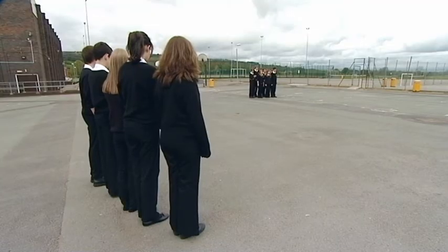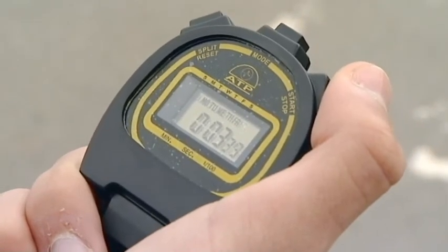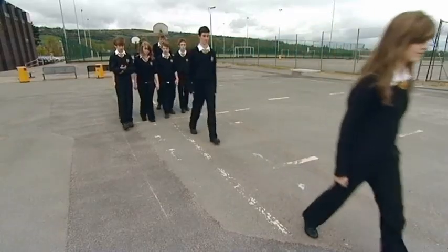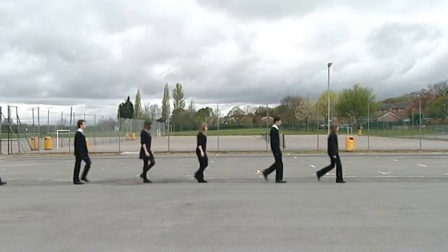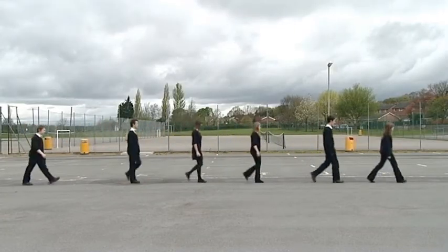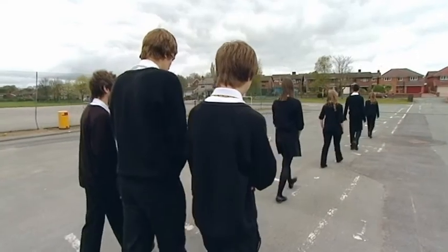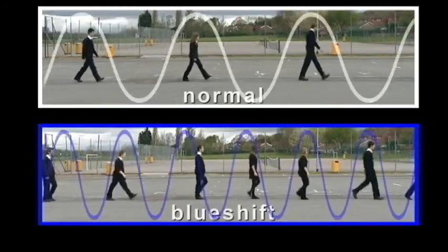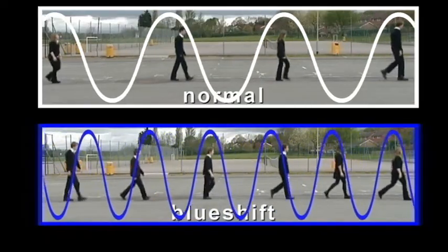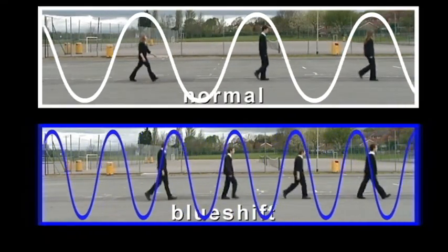You can also perform the same demonstration with the wave group moving forwards. To the observers, the wave will appear to be squashed. Its wavelength will have decreased. When an object is moving towards us, its light will appear to have a shorter wavelength. This is blue shift.